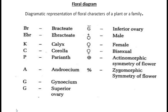Before we discuss the families, let us see what the floral diagram is. Floral diagram means the diagrammatic representation of floral characters of a plant or family. For example, if you take a potato plant, you can represent its flower's characters diagrammatically using specific symbols for each floral character. When you diagrammatically represent the floral characters of any plant or family, that diagram is called the floral diagram.